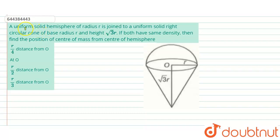The given problem states: a uniform solid hemisphere of radius r is joined to a uniform solid right circular cone of base radius r and height √3r. If both have the same density, find the position of the center of mass from the center of the hemisphere.